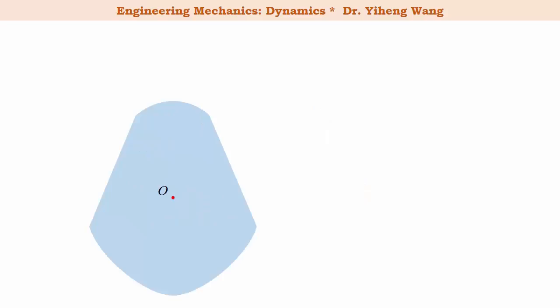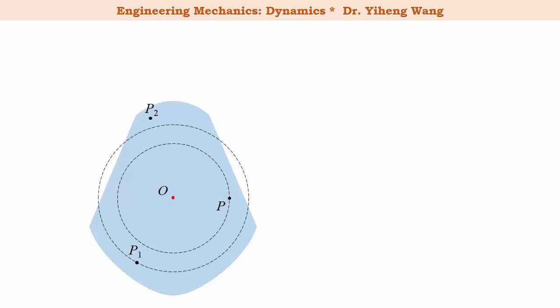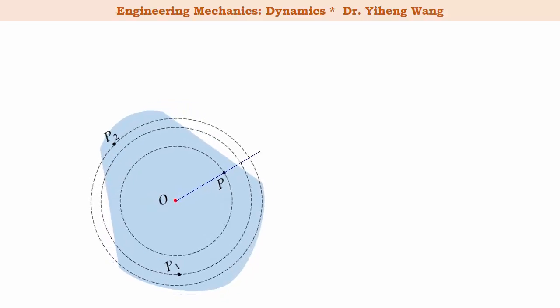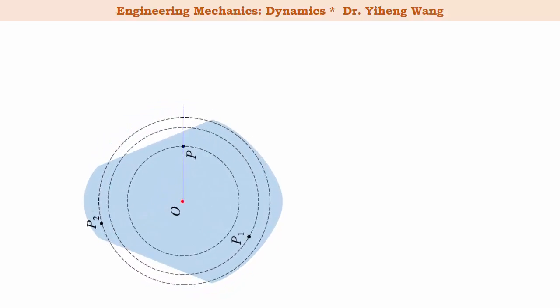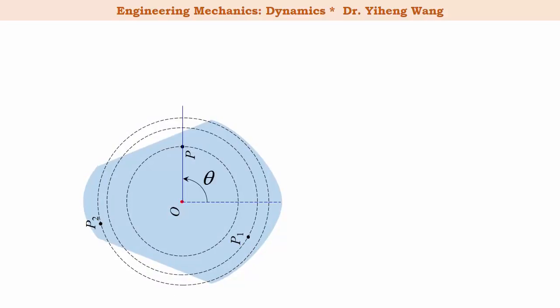During rotation about a fixed axis, for any point in this rigid body its path of motion is always circular, with radius being the perpendicular distance from this point to the axis of rotation. We can draw an arbitrary line within an arbitrary cross section perpendicular to the axis of rotation, and after some time it has rotated to a new position. Compared to its original position it has rotated by an angle theta.